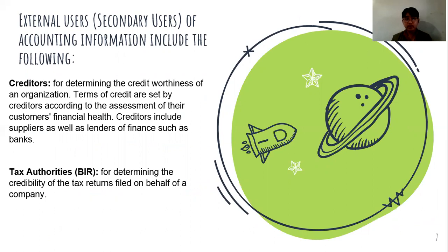For creditors as external users, accounting information is used for determining the creditworthiness of an organization. Terms of credit are set by creditors according to their assessment of the customer's financial health. Creditors include suppliers as well as members of finance such as banks. They use this information to decide whether the business can borrow money from them.